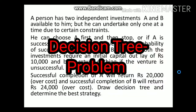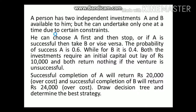Let's start this question. A person has two independent investments A and B available to him — two investment options. But he can undertake only one at a time due to certain constraints.